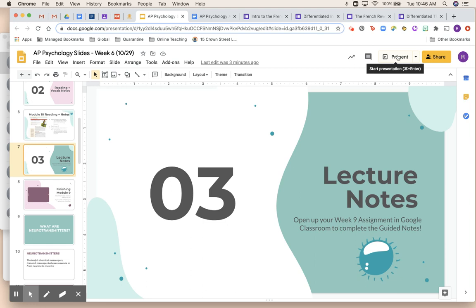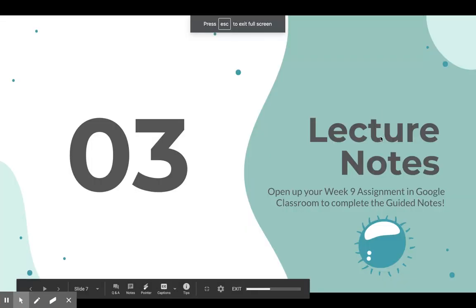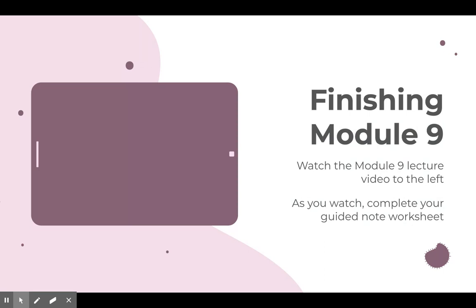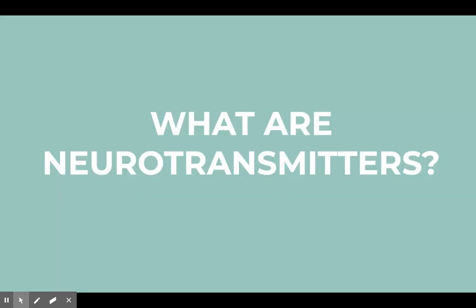Last week we introduced our new unit and began Module 9. We didn't finish Module 9 in the lecture, so I'm going to finish it today and then move into Module 10. One of the things we didn't talk about in Module 9 was neurotransmitters. We briefly talked about neurotransmission and how information is communicated from one neuron to the next — that involves the release of neurotransmitters — but we didn't really get to what these things actually are.